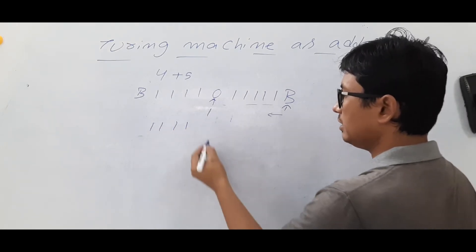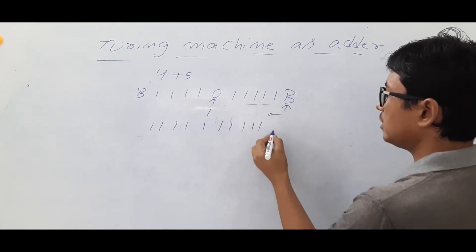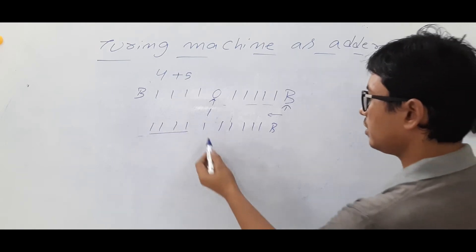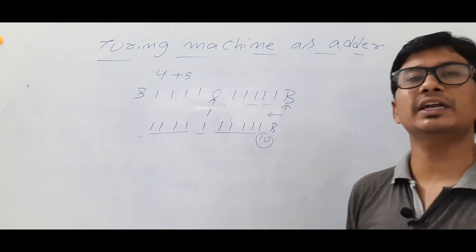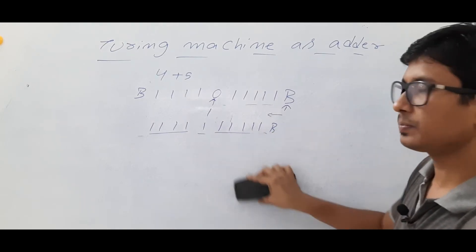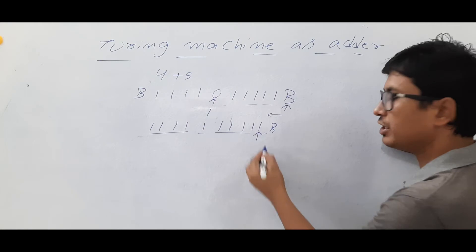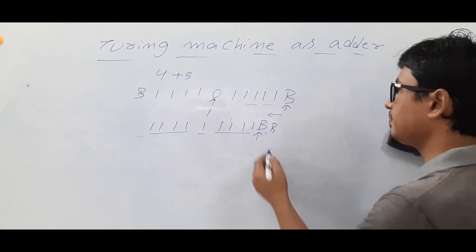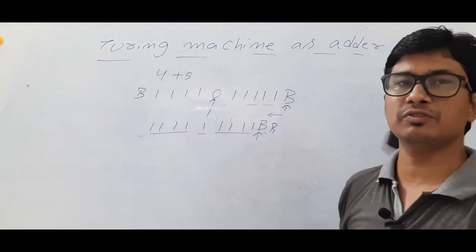Keep moving to the right; you will see the 1s — make them 1s and keep moving. If you see a blank, move left. If you leave it like this, the problem is that you have an extra 1: you will have 4 ones, then the converted 0, then 5 ones — that is 10 ones total, but 4 plus 5 should give 9 ones. So simply modify that last 1 to a blank, and then you will have exactly 9 ones.